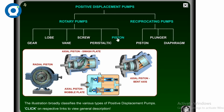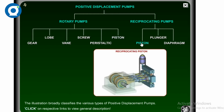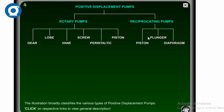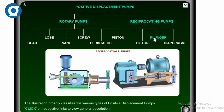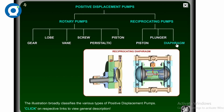Under axial piston pumps, there are three types: axial piston swash plate pump, axial piston wobble plate pump, and axial piston bent axis pump. Under reciprocating pumps, we have three types: reciprocating piston pump, reciprocating plunger pump, and reciprocating diaphragm pump. These are all the types under positive displacement pumps.